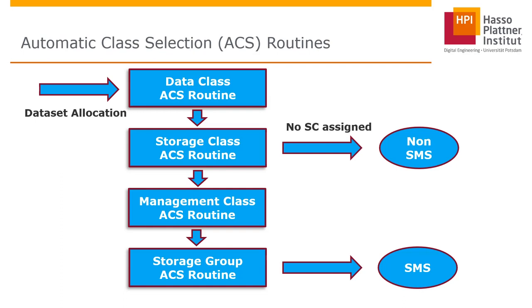For example, using the COBOL last level qualifier again: the data class defines that the logical record length is 80 and that a certain default disk space is needed. If you want to increase or decrease this default amount, you can provide additional parameters. But normally, just the dataset name is enough to let the ACS routines manage how the dataset is allocated. The second routine processed is the storage class. If no storage class is assigned, in most cases it's automatically assigned or not assigned, depending again on naming conventions.